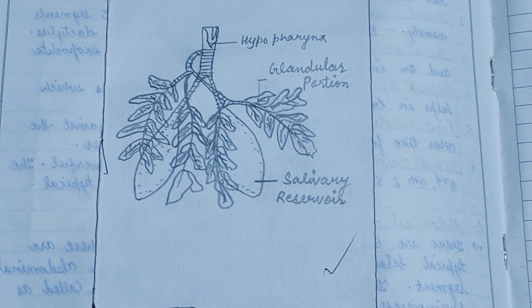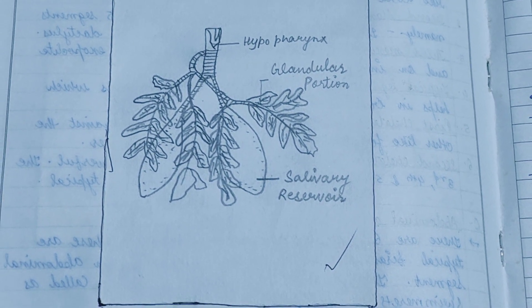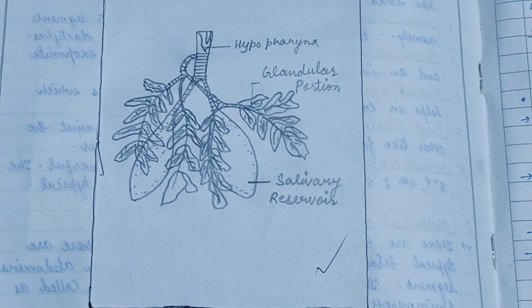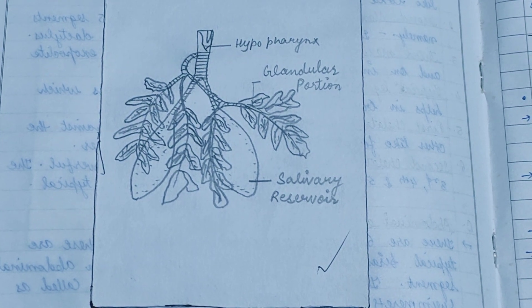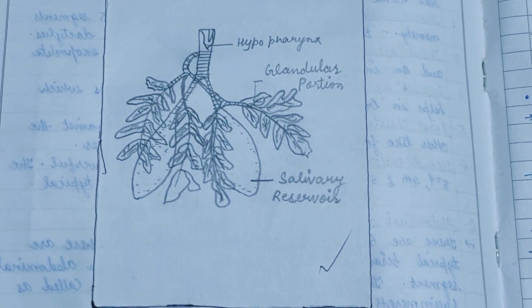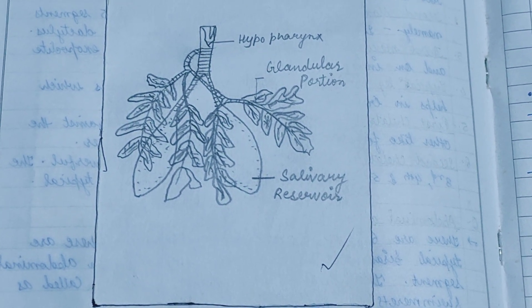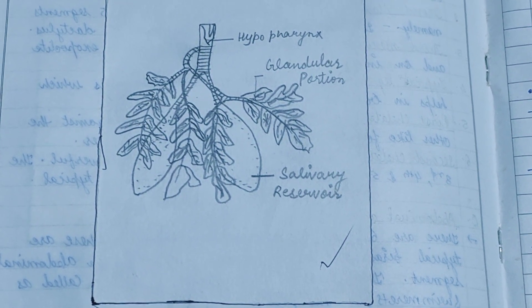This is all about the vital staining of the secretory granules in the salivary gland of the cockroach. Thank you and keep watching.